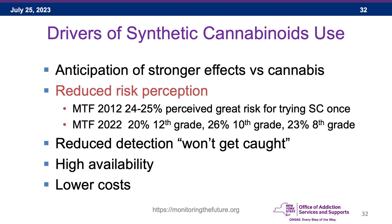Drivers of synthetic cannabinoid use include anticipation of stronger effects versus cannabis, perception of lower risk, difficulty of detection — it won't show up on a drug test — and in the past, high availability and low cost. In 2022, only 20% of 12th graders, 26% of 10th graders, and 23% of 8th graders perceived great risk in trying synthetic cannabinoids once.